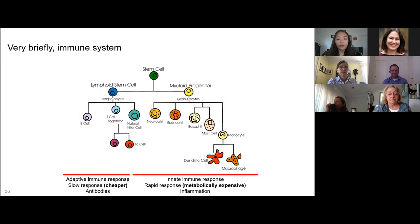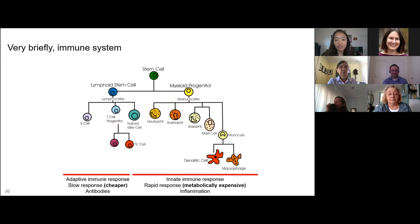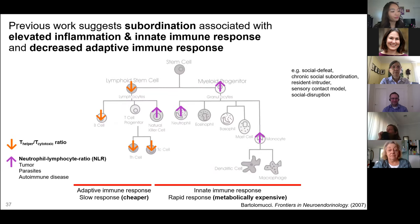Our immune system has two different responses: innate and adaptive. Innate immunity is the first line of defense, fighting off any harmful intruders — called antigens — and involves an inflammatory response. The adaptive immune system is the second line, fighting intruders with antibodies. In general, more energy is required to use the innate immune response than the adaptive. Previous literature suggests that social subordination or social defeat is associated with a primed innate immune system — high levels of inflammation. For example, a high neutrophil-to-lymphocyte ratio is a clinically used biomarker of systemic inflammation. In subordinate individuals, the adaptive immune system was generally decreased.